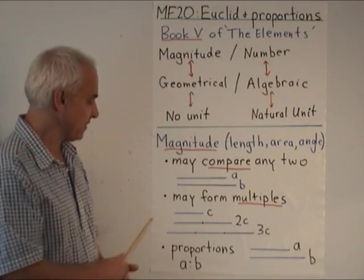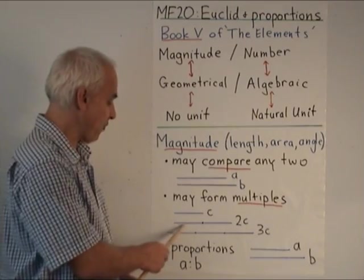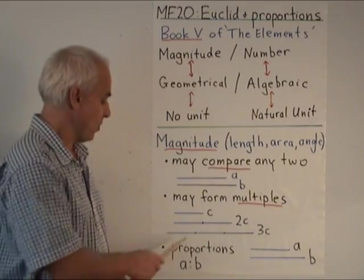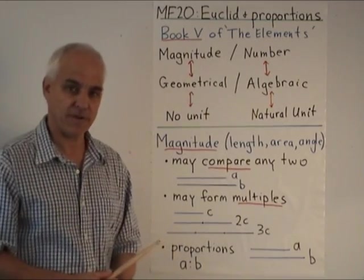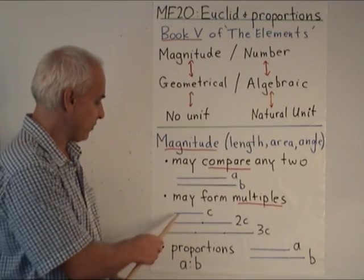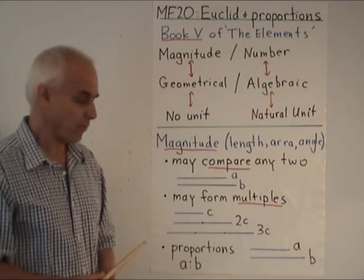Another thing that we're always allowed to do is to form multiples. So if we're given the magnitude c, we are allowed to form the multiple 2c, or 3c, or any integral multiple of c.